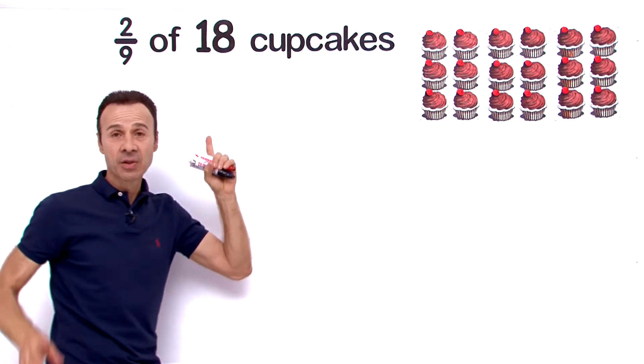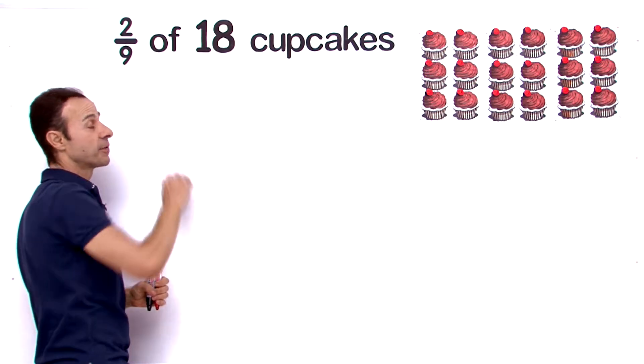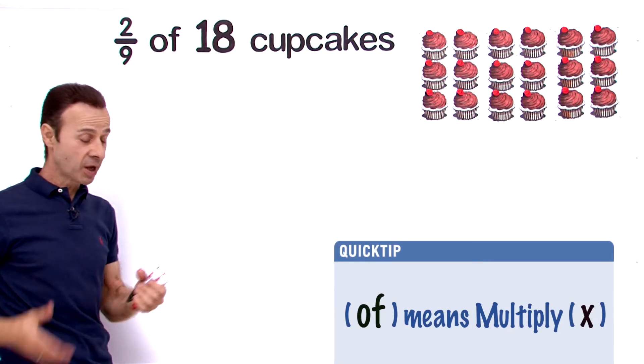So let's start with the numbers. The first thing to recognize is anytime you see the word 'of,' it means multiply. So immediately I'm going to change that into a multiplication sign.